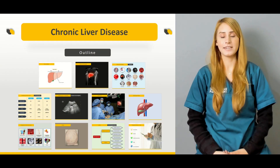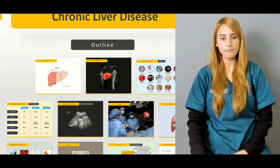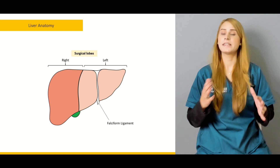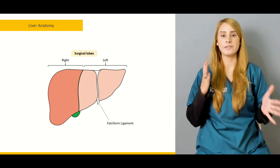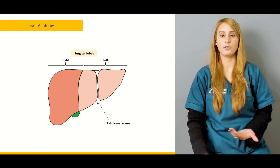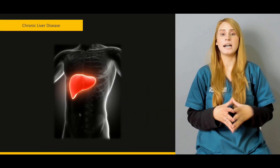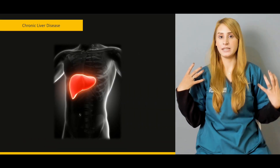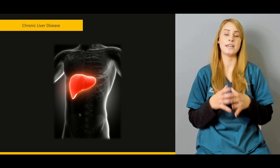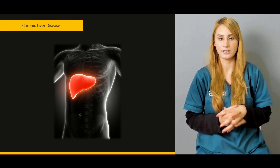Have a look at the outline of today's lecture. We'll be talking about a little bit about the liver anatomy, the different lobes of the liver, the surgical significance for the division of the lobes of the liver. And we'll be talking about the blood supply, the vascular drainage, and then a little bit about the portal and the systemic circulation.